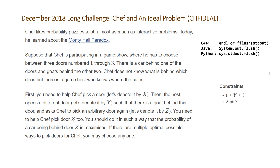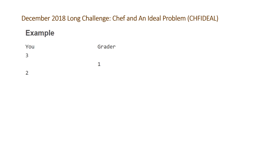Let's take a look at the example that CodeChef provided us with for this problem. It's just a back and forth, I guess, twice. Initially you output your first guess — in this case we've chosen door number three — then the host opens door number one, and then you choose door number two.